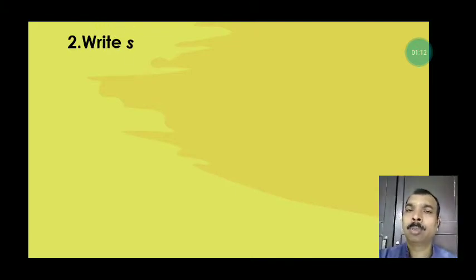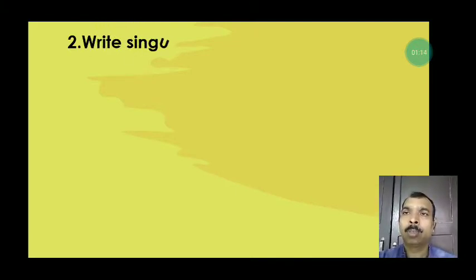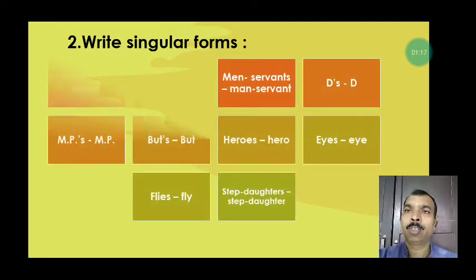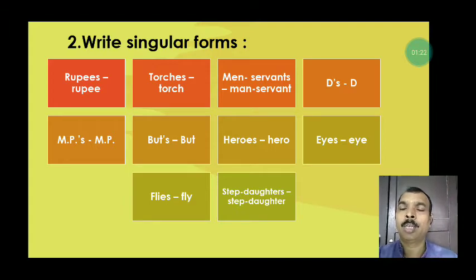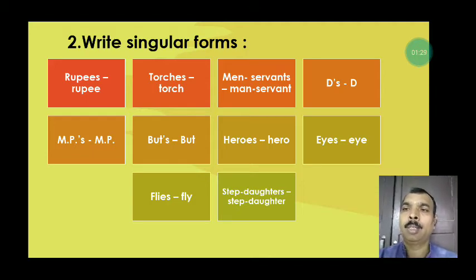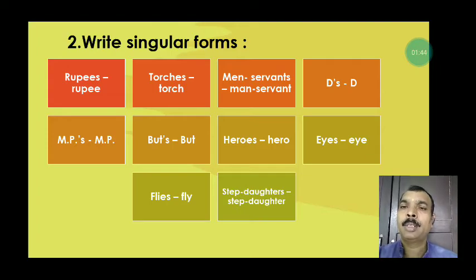Number two, write singular forms: rupees-rupee, torches-torch, men-servants to man-servant, D's-D, MPs-MP, birds-bird, heroes-hero, eyes-eye, flies-fly, stepdaughters-stepdaughter.